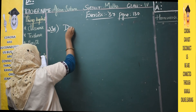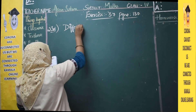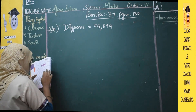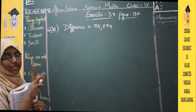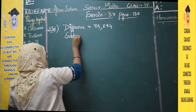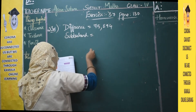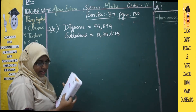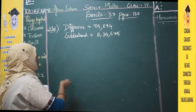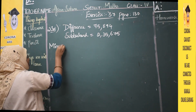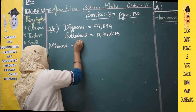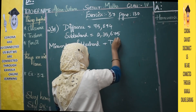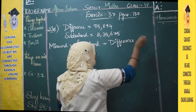So the formula is: minuend equals subtrahend plus difference. This we have already done in exercise 3.6. Let us write the numbers in columns. The subtrahend is 2,35,675 — the highest place is lakh — so let us write the place values: ones, tens, hundreds, thousands, ten thousands, lakhs. 2 will go under the lakh space: 2,35,675.